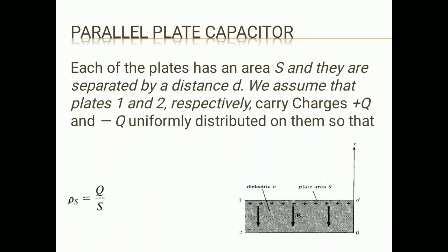Now we look at the parallel plate capacitor. First, identify the coordinate system — one plate is here and another plate is here. The positive charge is on one plate and negative charge on the other, oriented along the x-axis. We use rectangular or Cartesian coordinates. The two plates are separated by a distance d, with a dielectric material in between, and we assume the charge is distributed uniformly.